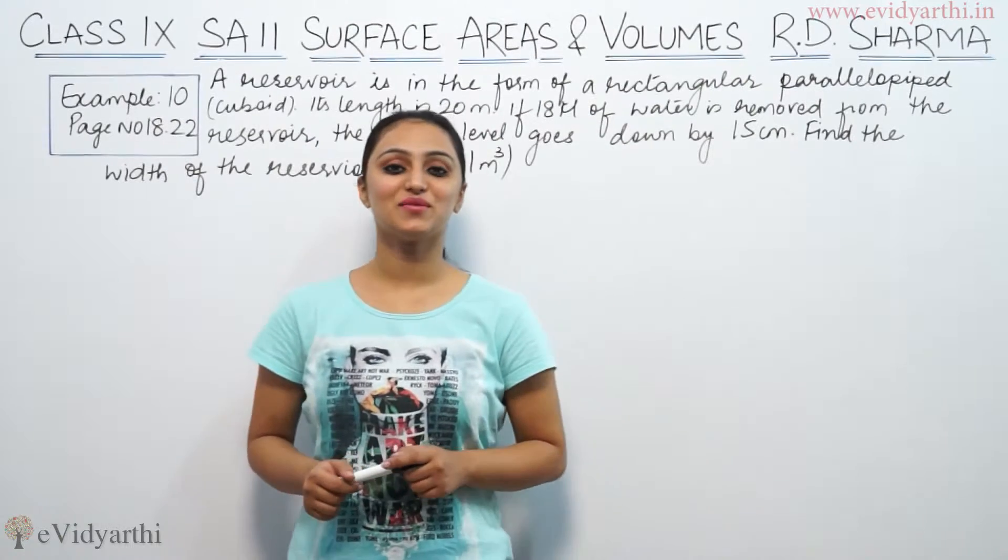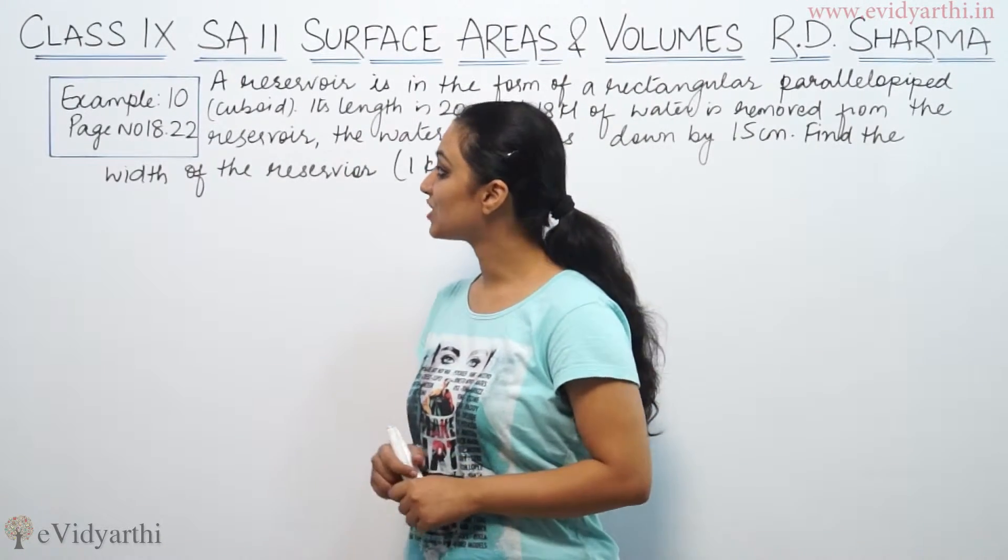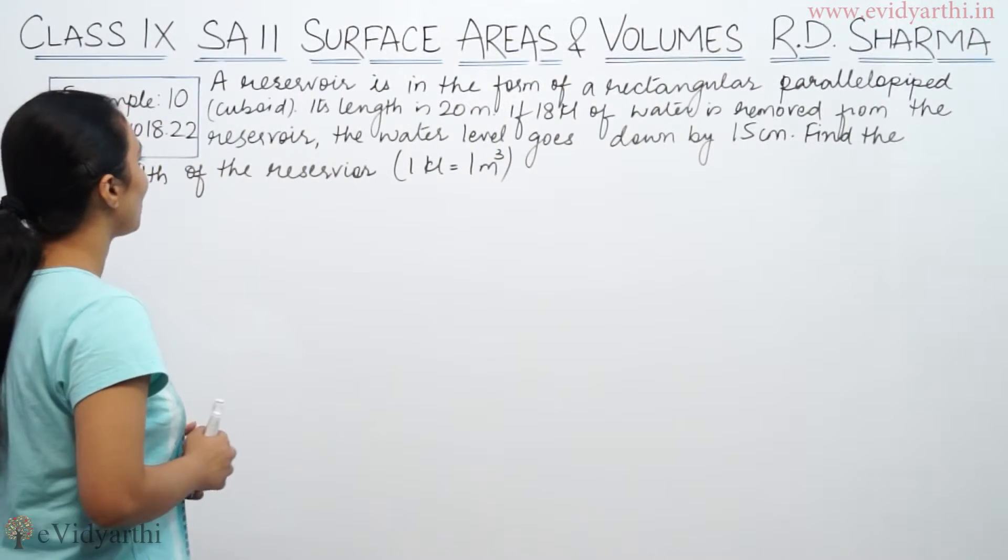Hi, this is Khushpoom with another question of surface areas and volumes, and this is question number 10 from R.D. Sharma page number 18.22, which says a reservoir is in the form of a rectangular parallelepiped.